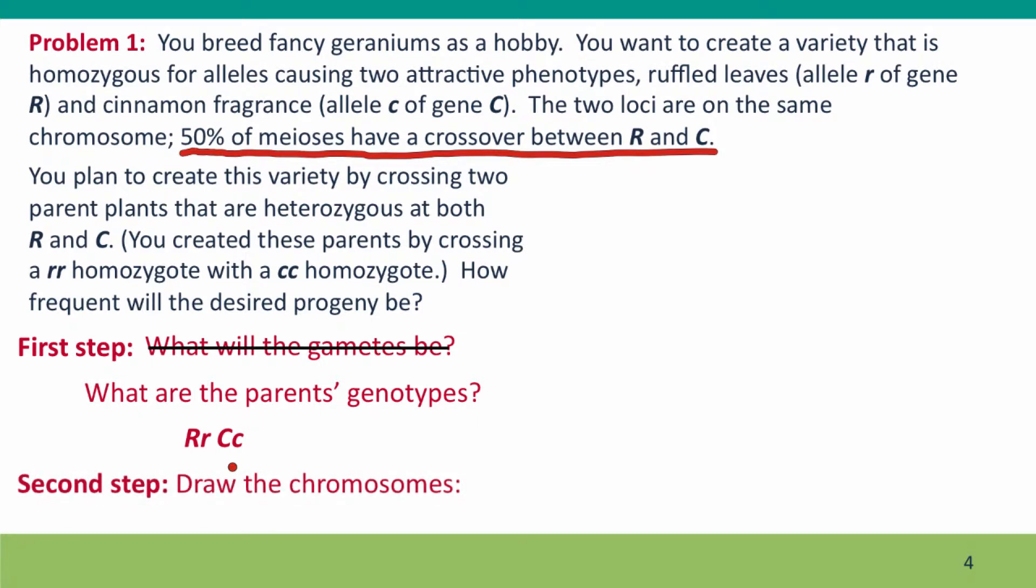The next step is to draw their chromosomes, because we want to get to predicting what the gametes will be. Before we can do that, we need to know what chromosomes we're dealing with. And this is where there's a new wrinkle. You're not told directly the parent's chromosomes. You have to infer them. You're told how the parents of this genotype were made by crossing a parent with this genotype and a parent with this genotype.